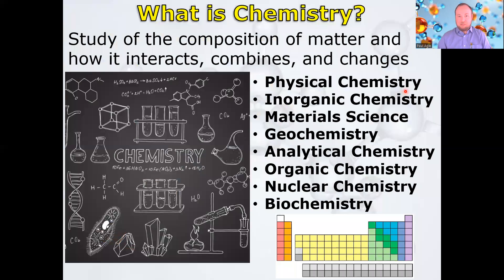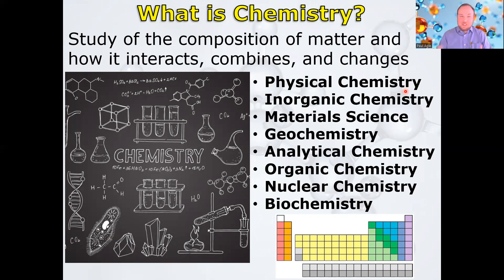But what exactly is chemistry? Chemistry is about matter. So what is matter? Matter is basically everything. What are the fundamental building blocks of matter? How do different substances interact with each other? How do they combine to form new substances or change into other things? What controls these reactions and how do they impact our lives?